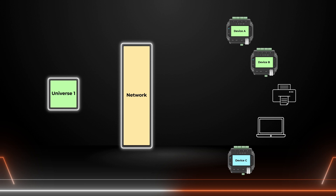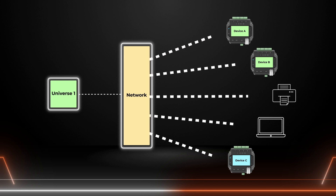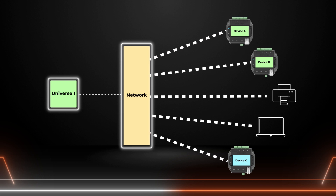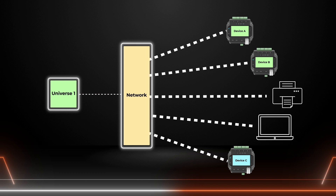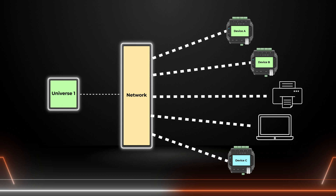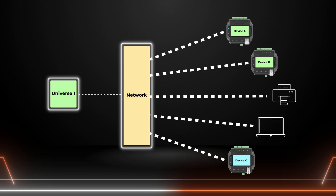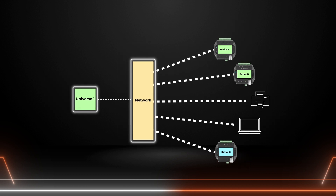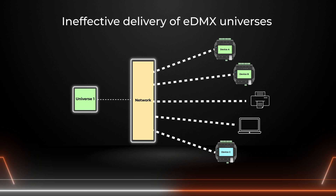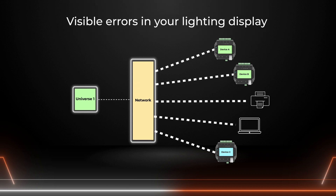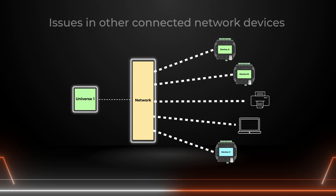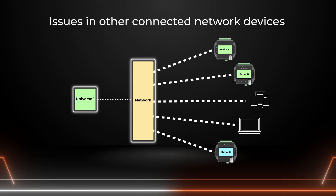Although this is a very simple way to configure an EDMX generator, this approach will normally result in every device on the local network receiving a continuous stream of unnecessary, irrelevant information. Some devices may not have the bandwidth or processing power to manage all of the EDMX universes being streamed to it. This excessive network traffic could lead to ineffective delivery of EDMX universes, visible errors in your lighting display, and even issues in other connected network devices, especially when working with higher DMX universe counts.